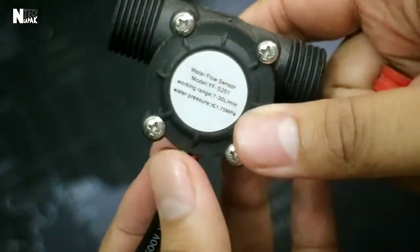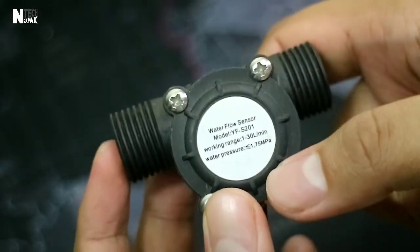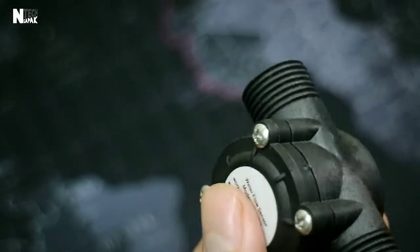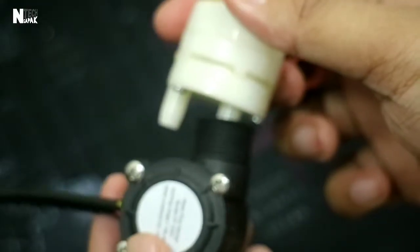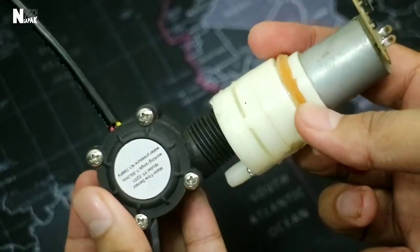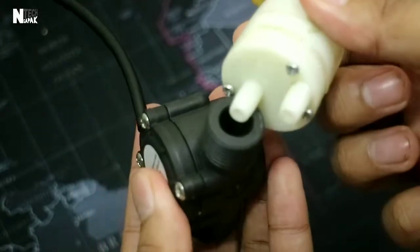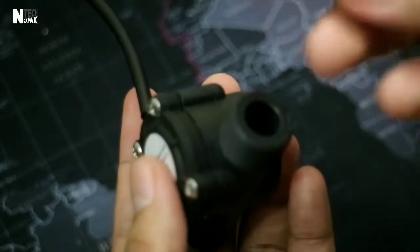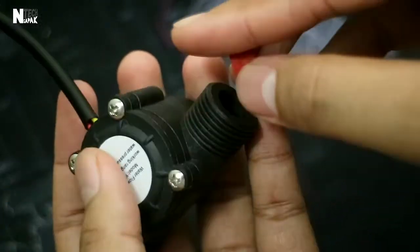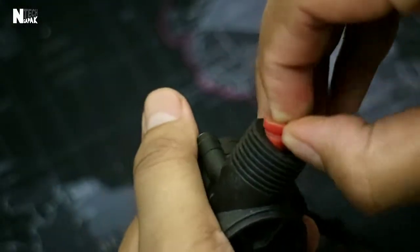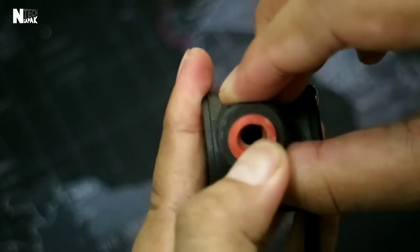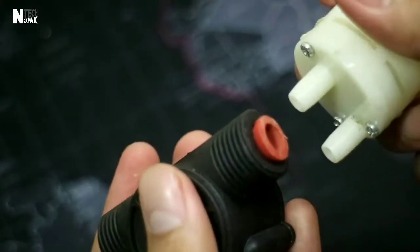For the water flow sensor, I'm using YF-S201. We'll install the pump here. Since this is loose, I'll add a rubber gasket - LPG gas rubber. Like this. We put it in here. There, like this. Now we can place the pump there.